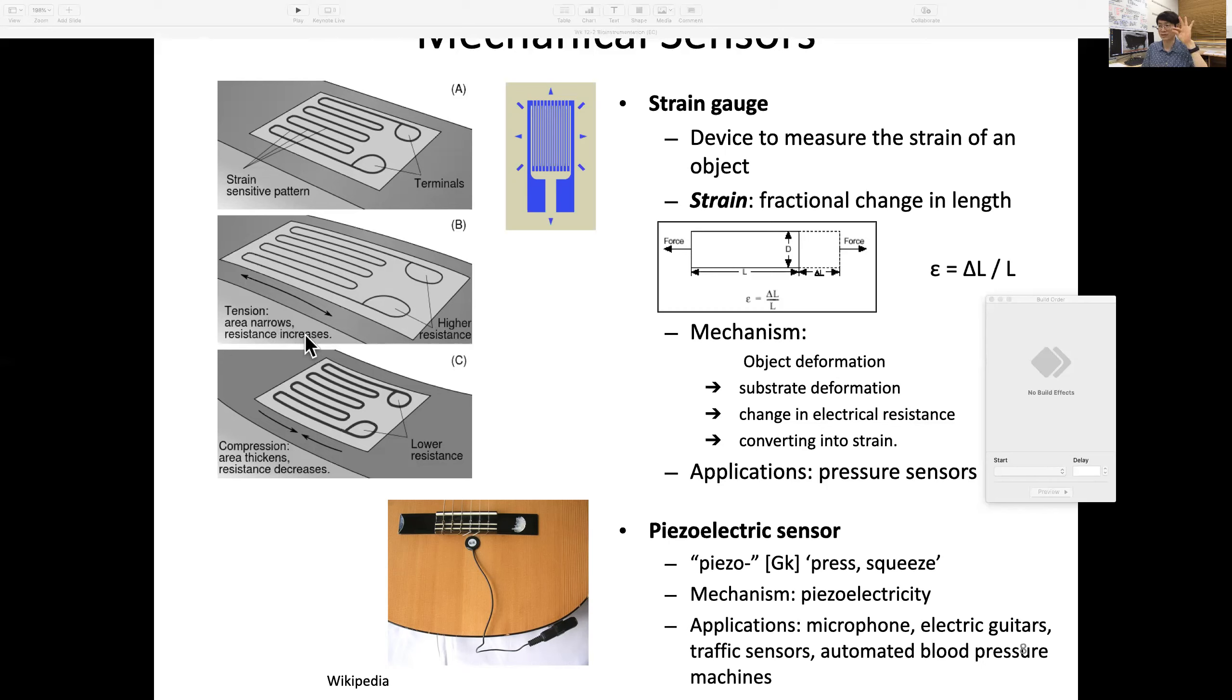In the compression case, that area becomes thickened, so resistance goes down. This very simple principle is used for measuring strain, which can be measured for pressure changes.